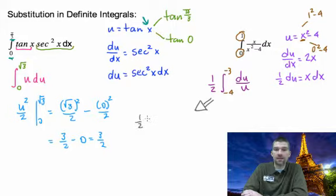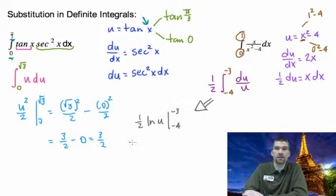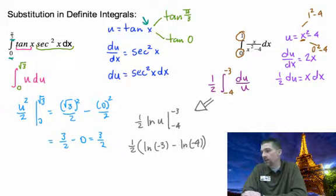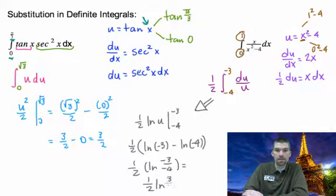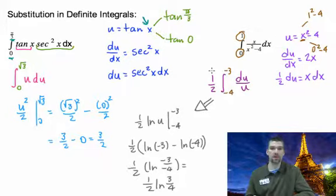It integrates to one half times the natural log of u evaluated from negative four to negative three. Remember, one over u, when you anti-differentiate that, is natural log u. So now, to finish it up, we're just going to have one half times where we stop, which is natural log of negative three, minus where we start, which is natural log of negative four. But you can't take natural logs of negative numbers. And so what this is really saying is no bueno. But if you notice, we've got natural log of negative three minus natural log of negative four. We can divide those. So that's one half times the natural log of negative three over negative four. And the negatives divide out. Because negative divided by negative is positive. So it's three fourths. And there you go. There's some substitution with your upper and lower limits of integration.